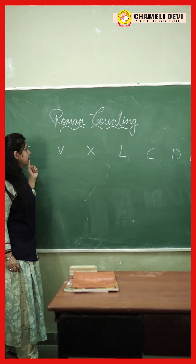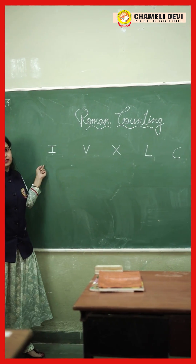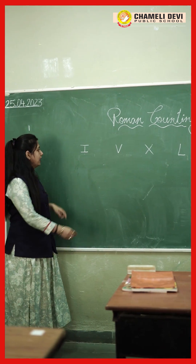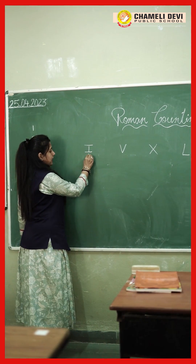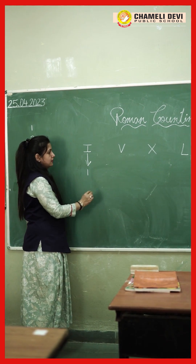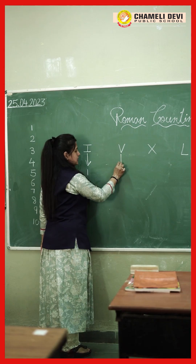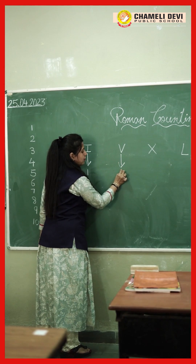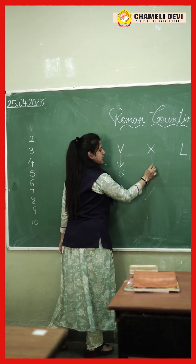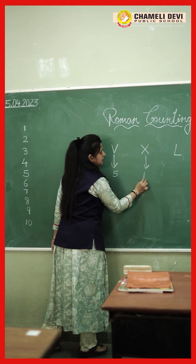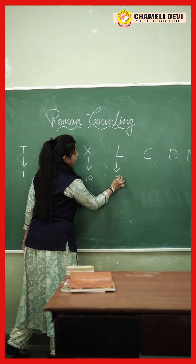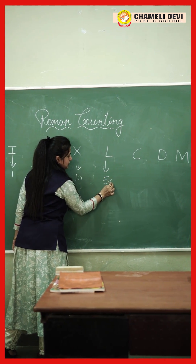Now children, for these letters we have one value. I stands for 1, V stands for 5, X stands for 10, L stands for 50.